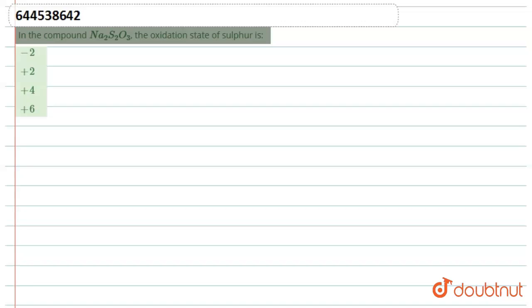Hello everyone, the question is: in the compound Na2S2O3, the oxidation state of sulfur is minus 2, plus 2, plus 4, or plus 6? Na2S2O3 has two sulfur atoms and both sulfur atoms are different.